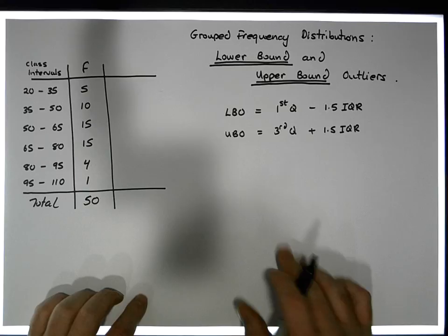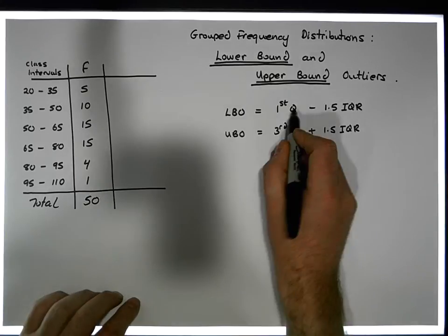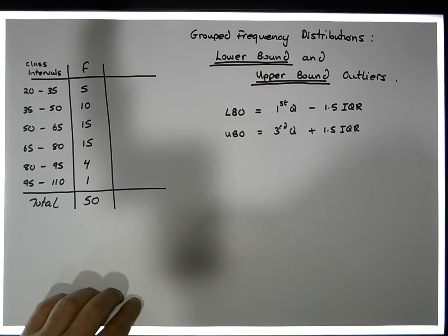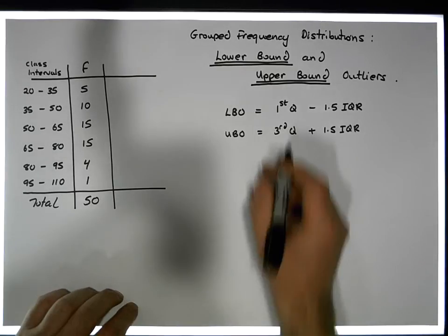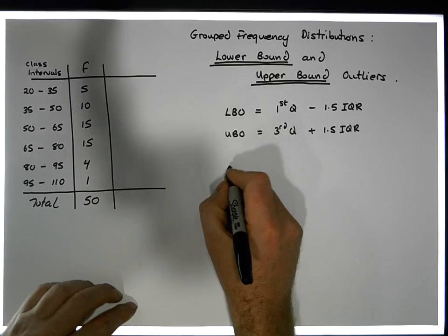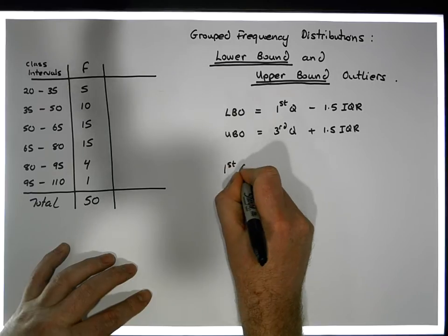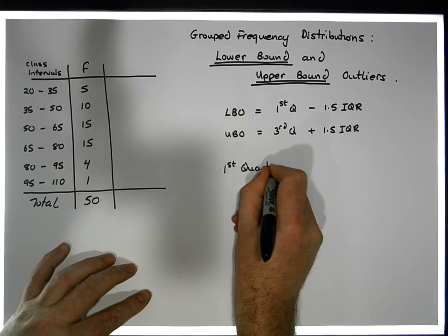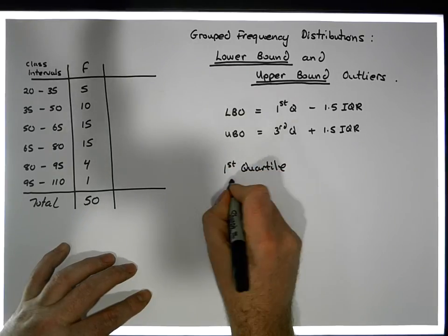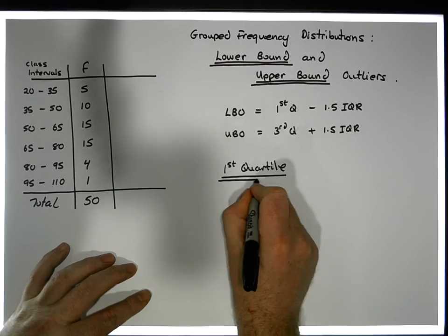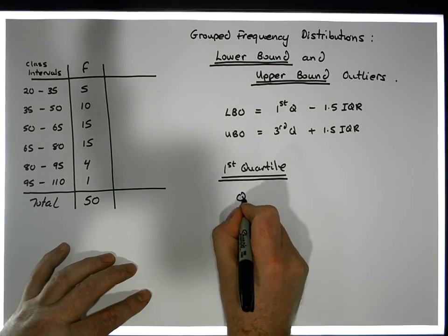So no matter what we do, we have to calculate these quartiles. Now to calculate the quartiles, there's a formula, and the formula looks something like this. So for the first quartile — there's a previous video that actually deals with this — for the first quartile the formula looks like this, let's call it Q1.